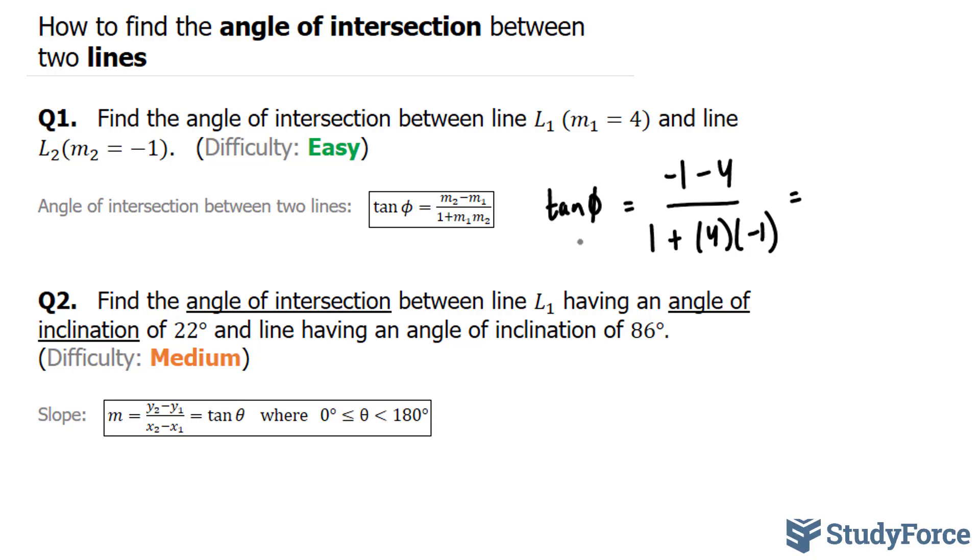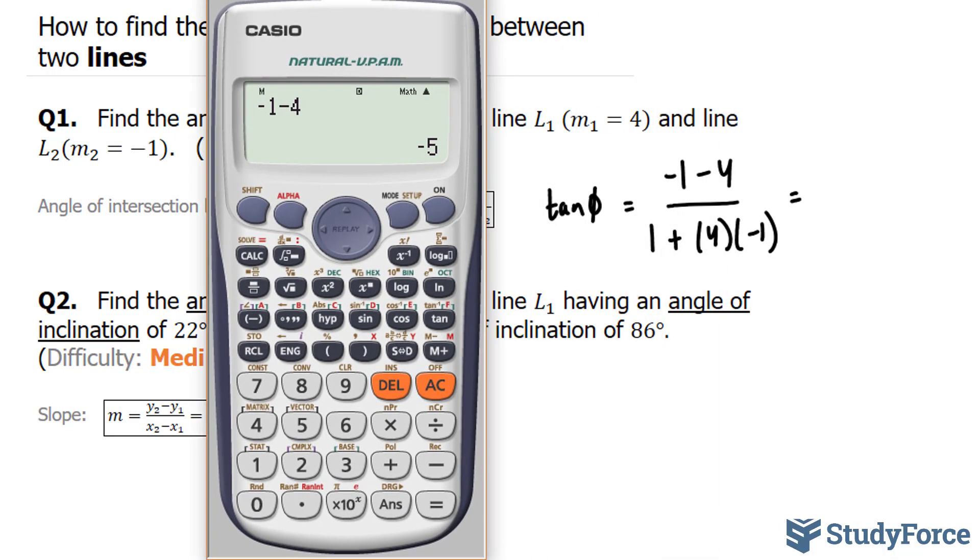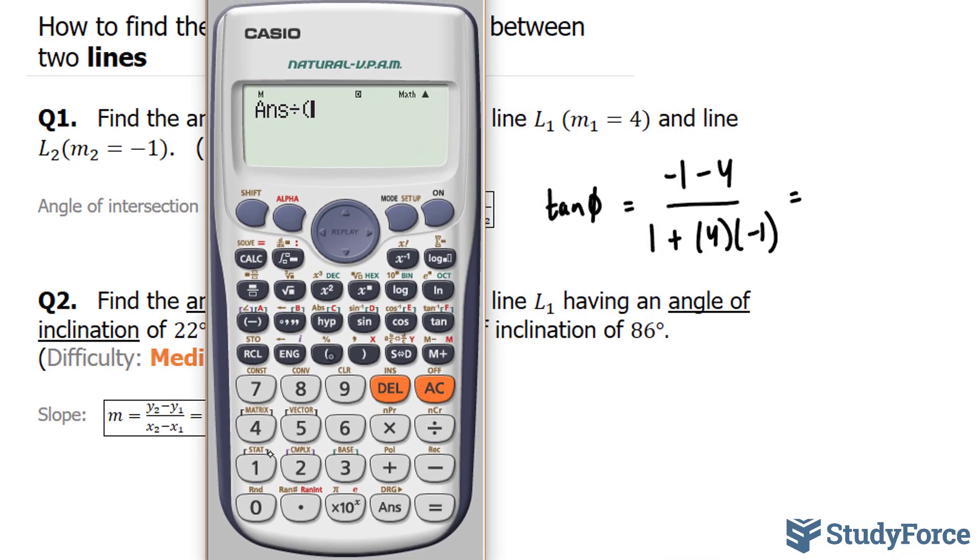Phi represents the angle. Now, using our calculator, negative one minus four gives us negative five, divided by one, and four times negative one is negative four, so minus four gives us the ratio of five over three.